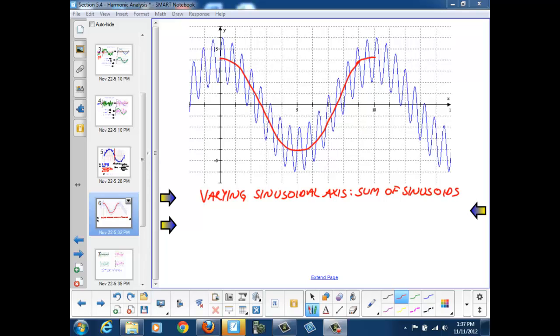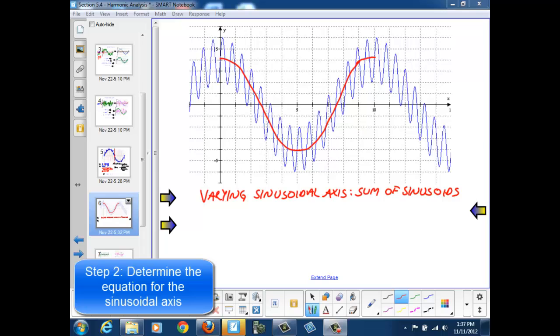Now we just have to determine what those two sinusoids are. One of the sinusoids will be the sketch of our sinusoidal axis, which we can see by its behavior that it's going to be a cosine graph because it starts at a maximum, drops, and then returns to a maximum.